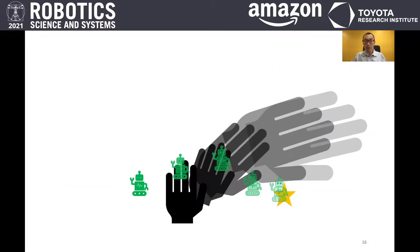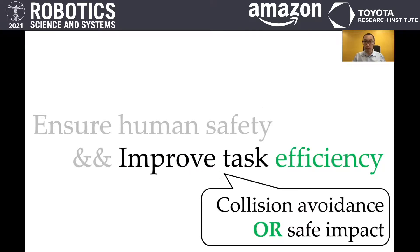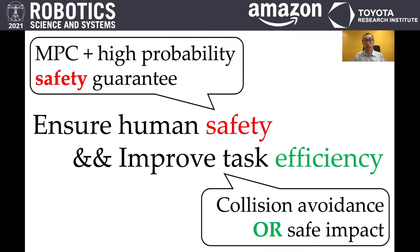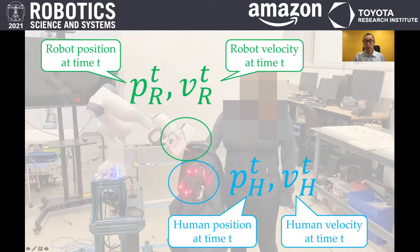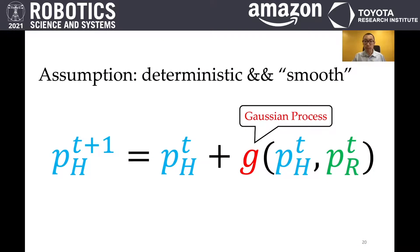In this example, even though the uncertain human region is huge, the robot can still make progress towards its goal by making safe impacts with the human hand. With this definition in mind, we propose a model predictive control algorithm that can guarantee safety with a high probability. In this work, our system represents the robot hand and the human hand as two-point masses. We assume that the human is deterministic and smooth. Thus, our system models the human using this unknown function g, which is learned via a Gaussian process.